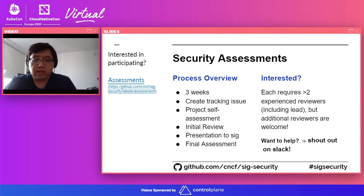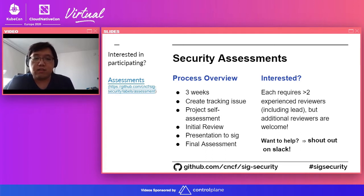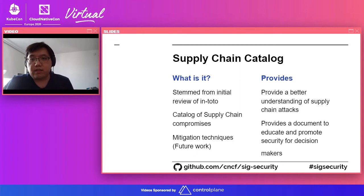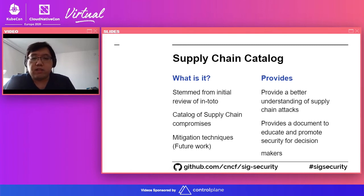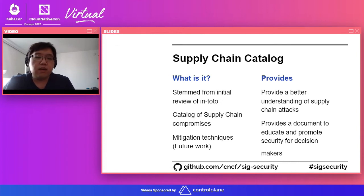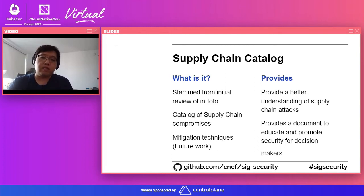Right now we have Cloud Custodian and Buildpacks coming up. If you're interested in helping out, you can reach out to us on Slack, or you can go into the assessment page and look for the assessments in the issues. Another thing that we've done is the supply chain catalog. This was actually brought about from the OPA review and it addresses some of the issues around supply chain — what are supply chain attacks, like typosquatting that Jay mentioned. There's a detailed guide on potential supply chain attacks as well as real examples that security practitioners can take back to management.